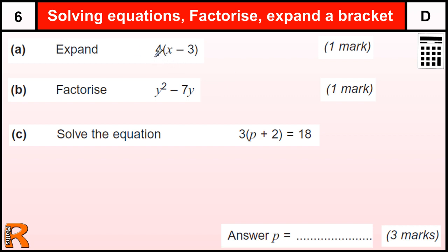All we have to remember here is to multiply both terms in the bracket by the number on the outside. So we times the 4 by the x to get 4x, and times the 4 by the minus 3 to get minus 12. Shouldn't really get that one wrong.